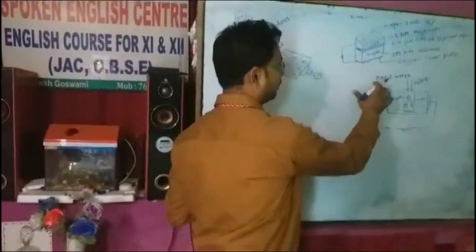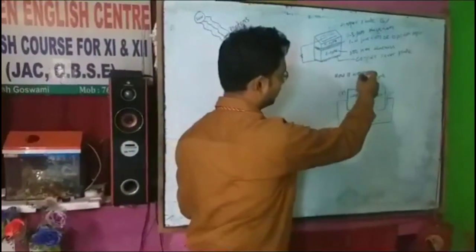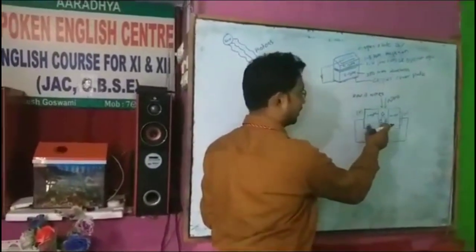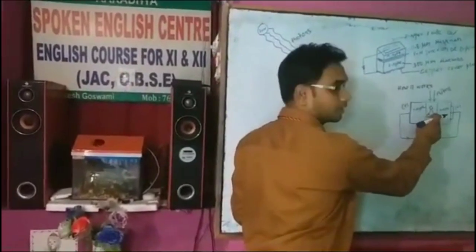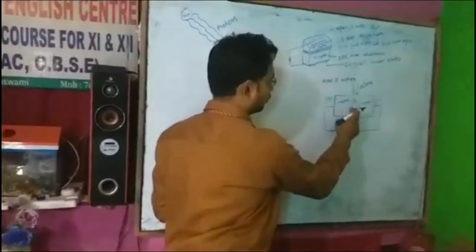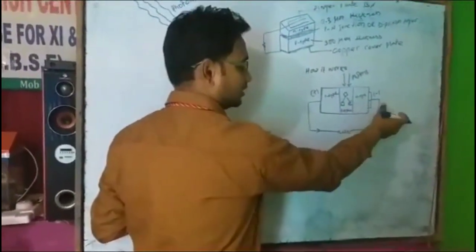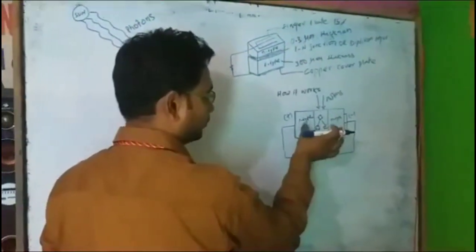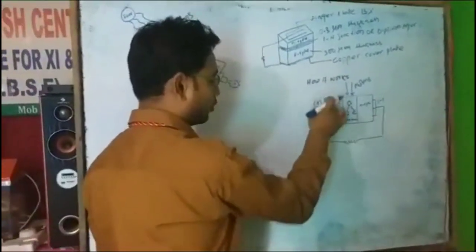Now, how does it work? First of all, photons come to the P-N junction or depletion layer. After that, it will separate into two parts: holes and free electrons. Free electrons move towards the N-type and holes move towards the P-type. Electrons are sucked by the finger plate.